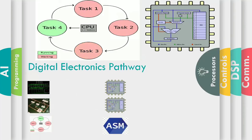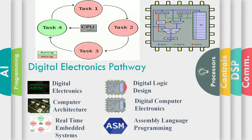There is also a Digital Electronics and Microprocessors pathway. This pathway may have five undergraduate courses including Digital Electronics, Digital Logic Design, Computer Architecture, Digital Computer Electronics, and Assembly Language Programming. These are interdisciplinary courses equally important for electrical, computer engineering, and IT students. The real-time embedded systems course is related to scheduling tasks in single or multi-processor environments.